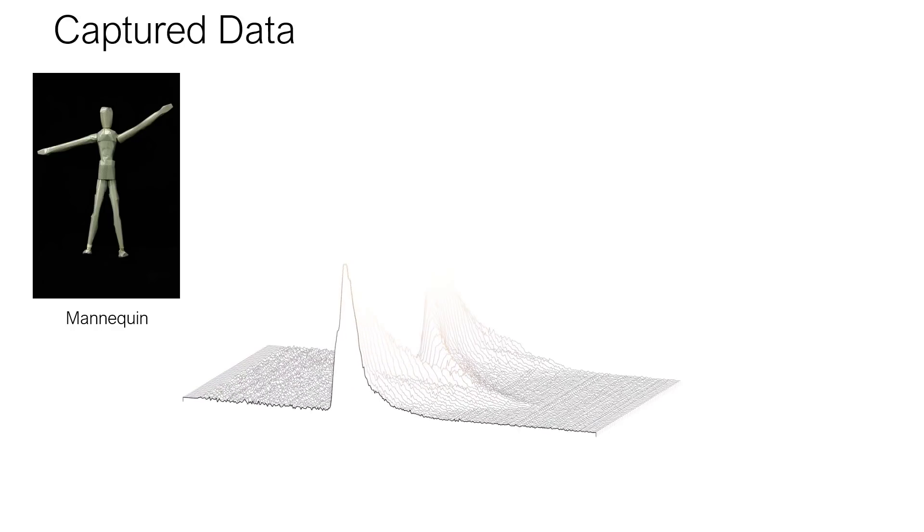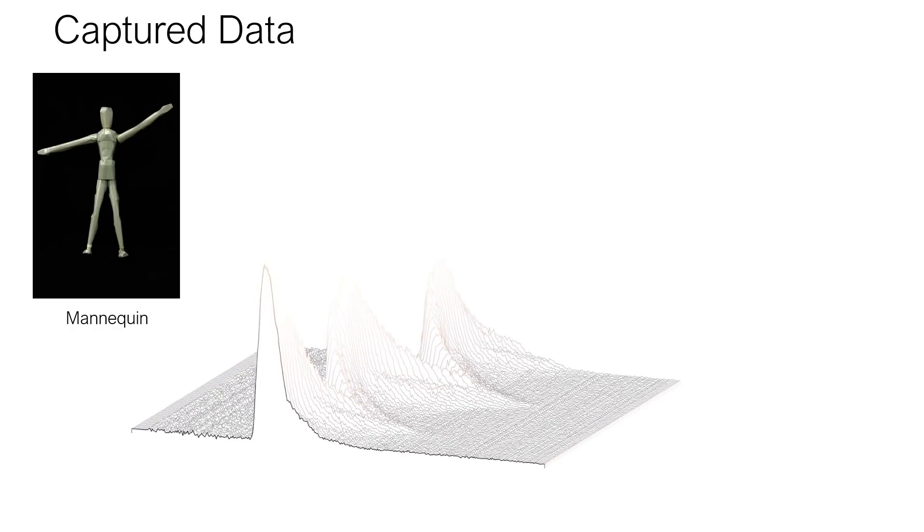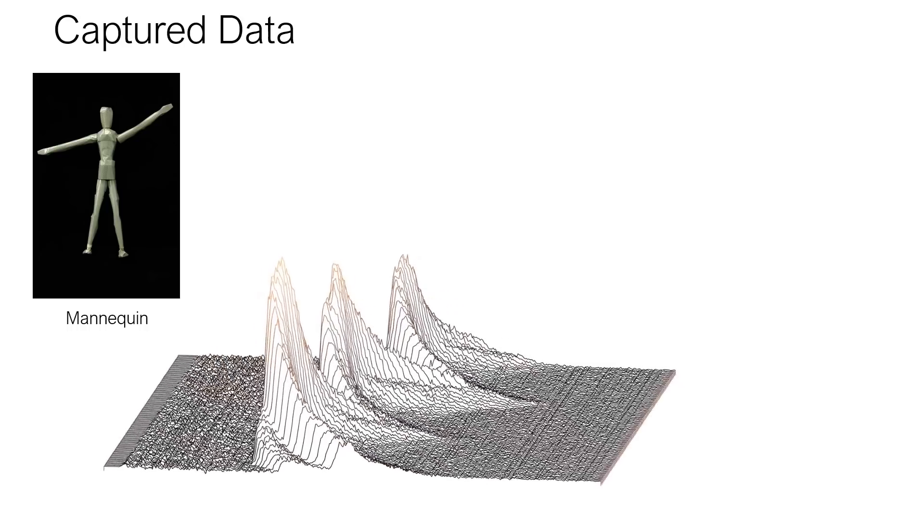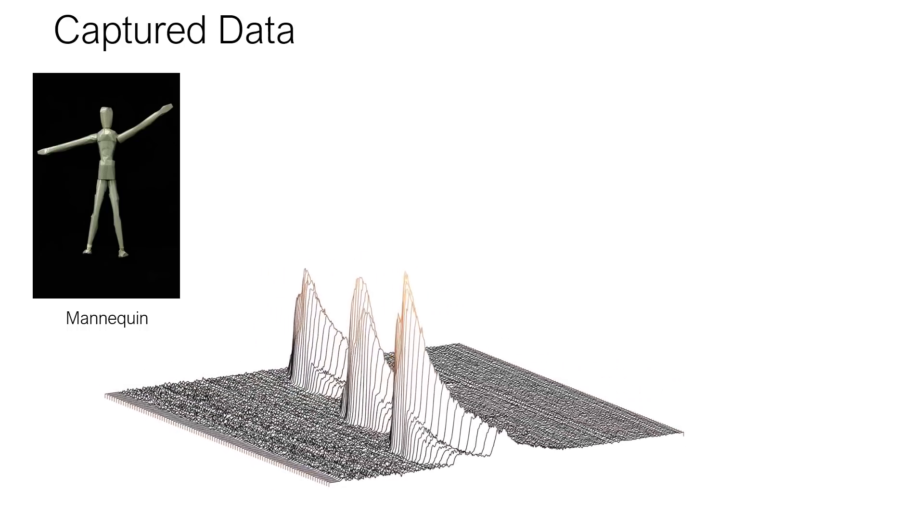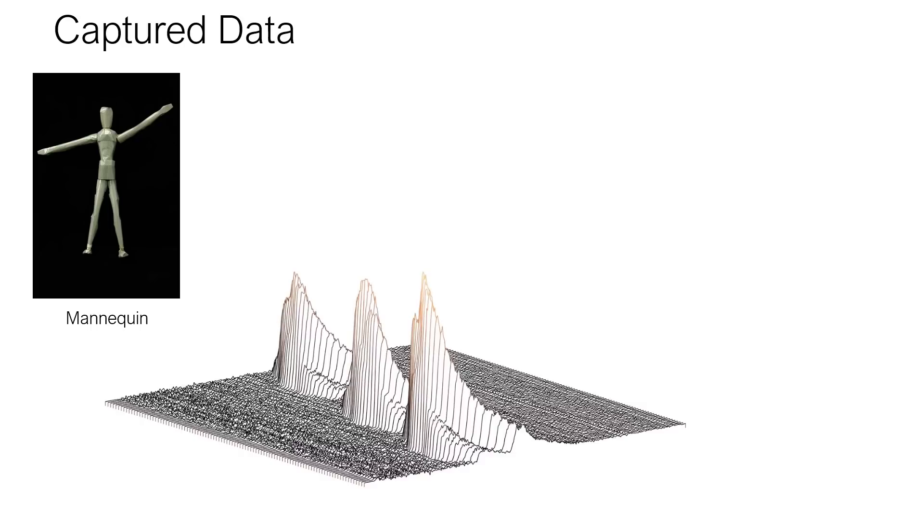However, as the hidden object moves, these transient measurements change. In doing so, the transient measurements encode information about both the shape and trajectory of the mannequin.